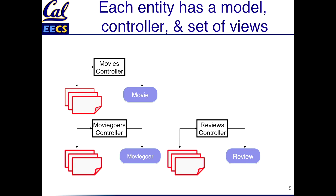Of course, there might be interrelationships between entities. For example, it doesn't really make sense to talk about a review unless you connect it to the moviegoer who wrote it and to the movie that it's about. So one of the things you have to be able to do is make these associations among different kinds of models and reflect those associations when collecting and presenting data. We'll show how that gets done as well.